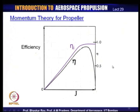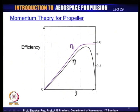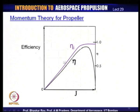The induced efficiency reaches a maximum and does not show a fall with increasing J, as shown in the figure. The actual efficiency of a propeller would go up and then start falling with advance ratio J. If you plot efficiency versus advance ratio, the efficiency keeps increasing and at a particular advance ratio it reaches its maximum. This is a typical propeller characteristic depending on the propeller design and what advance ratio the propeller is designed for.